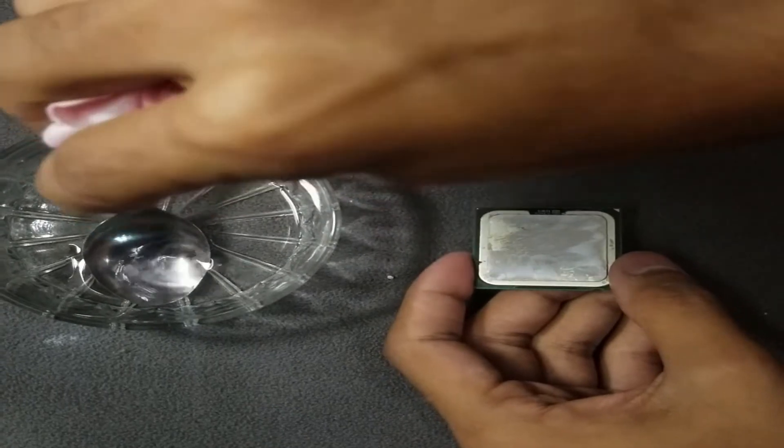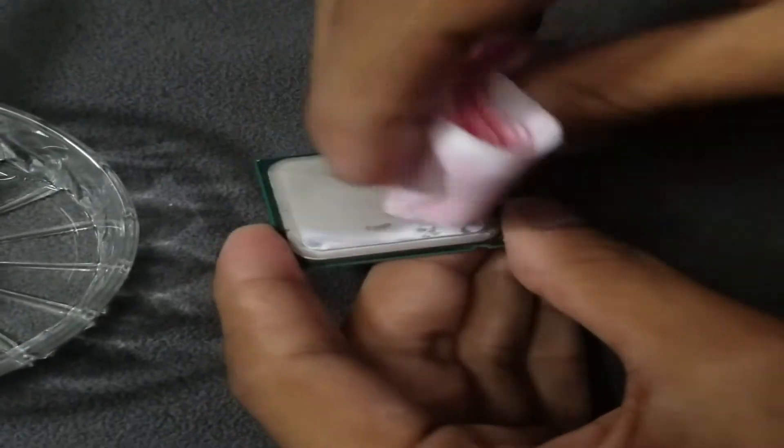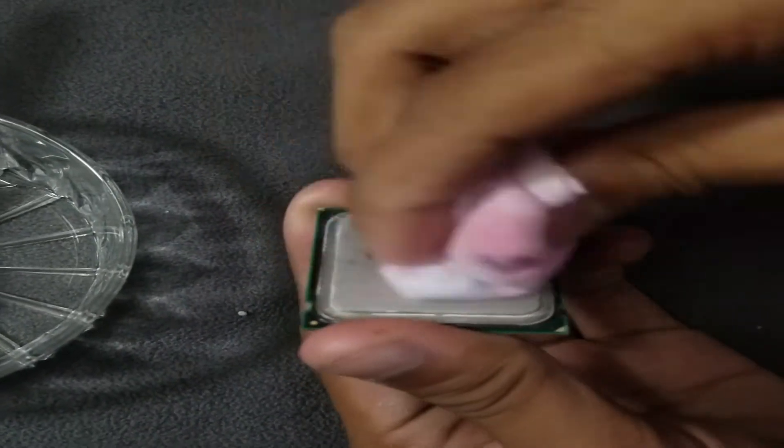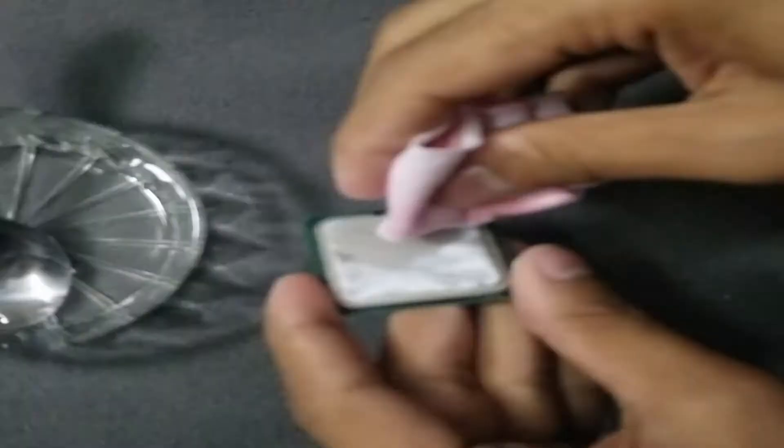Then gently wipe the paste from the CPU and make sure there is no paper or cloth residue left on the surface. And boom! You have removed the thermal paste off the CPU without using any alcohol.